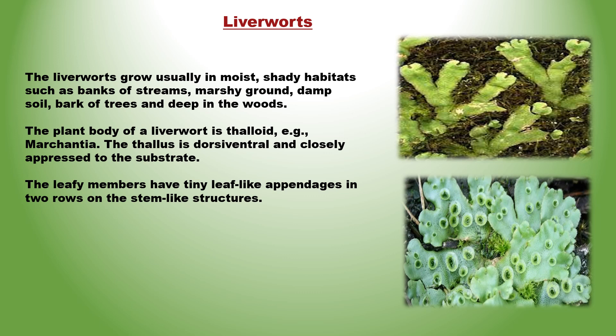Liverworts साधारणतया moist तथा shady habitats, जैसे नदी का किनारा, marshy ground, bark of trees तथा लकड़ी के अंदर मिलते हैं। इनकी plant body thaloid होती है, जैसे Marchantia। Thallus, dorsiventral तथा substrate से closely चिपका होता है। इनके leafy members में leaf जैसे appendages लगे होते हैं, जो दो rows में stem जैसे structure से लगे होते हैं।